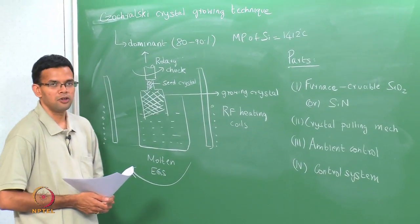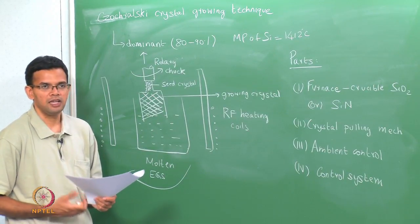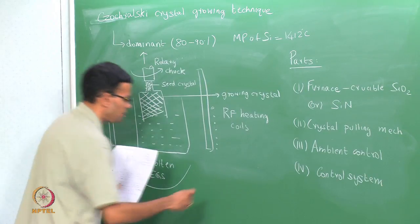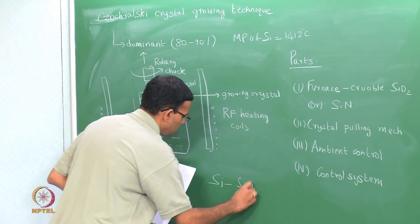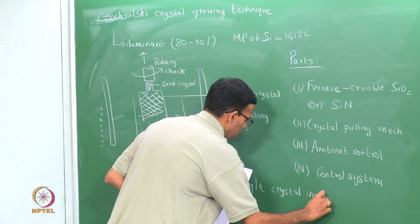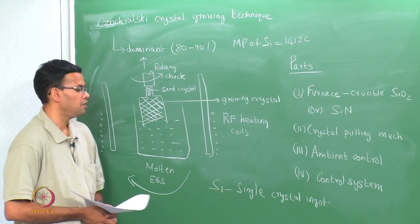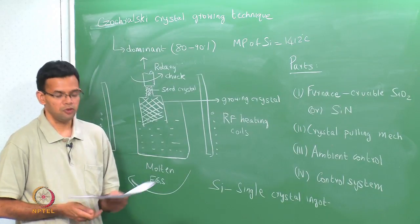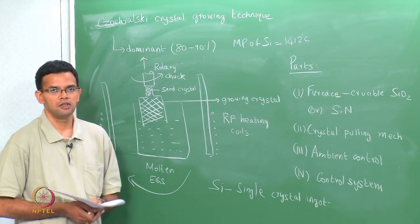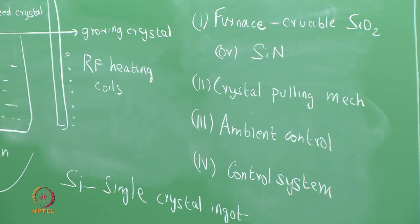In the Czochralski growth technique, the seed crystal has the same orientation as the final wafer we want. The final solidified silicon is your single crystal ingot. For 450-millimeter wafers, the ingot can be quite heavy — approximately 800 kilograms — so this process is usually automated so the entire thing can be done without human intervention.